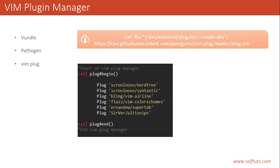Once we have written the plugin names inside plug#begin and plug#end, we need to install them. vim-plug provides some commands: PlugInstall to install plugins, PlugUpgrade to upgrade plugins, and PlugClean to remove plugins.